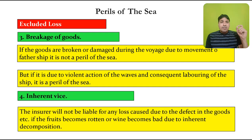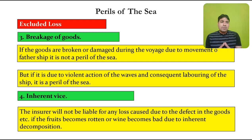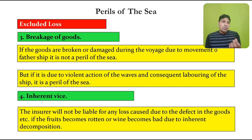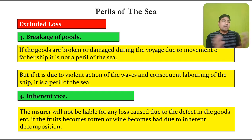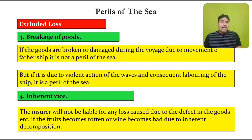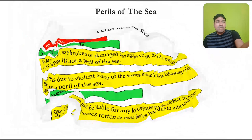Another excluded loss is inherent vice. The insurer will not be liable for any loss caused due to a defect in the goods themselves. If fruits become rotten or wine becomes bad due to inherent decomposition — a defect that is internal to the goods — then that loss will not come under perils of the sea and the insurance company will not be liable.